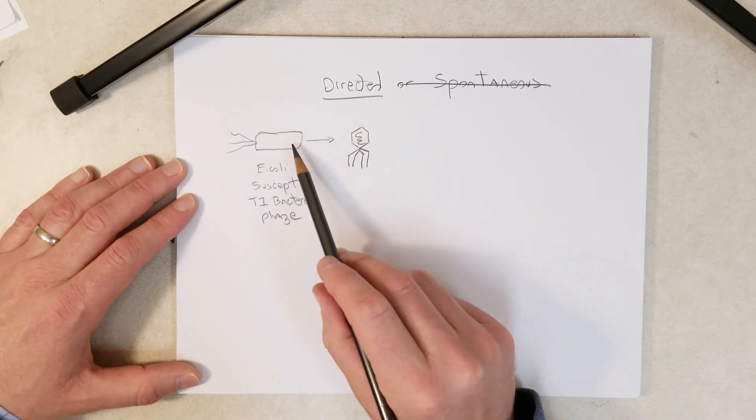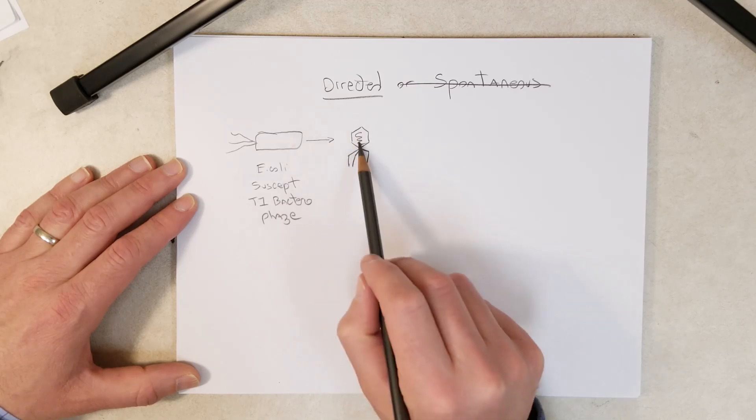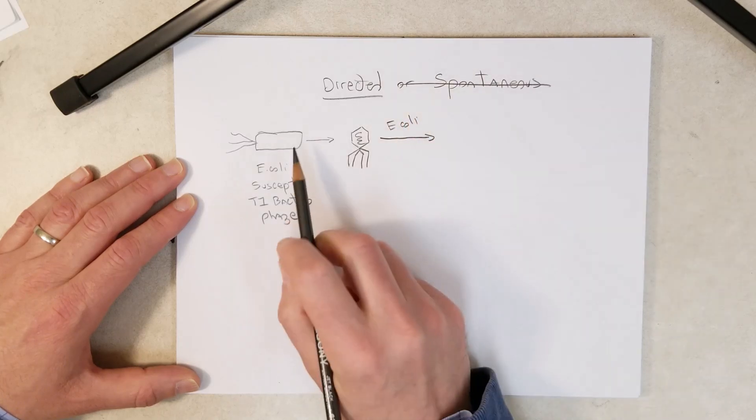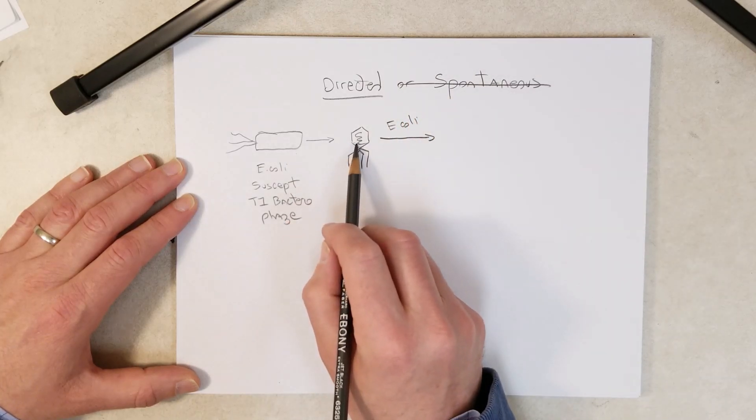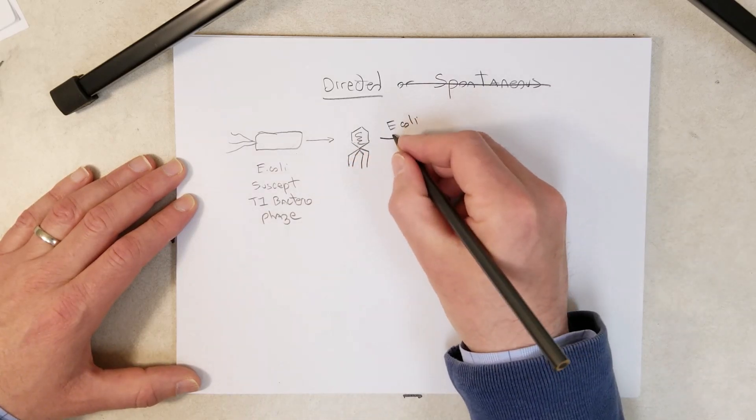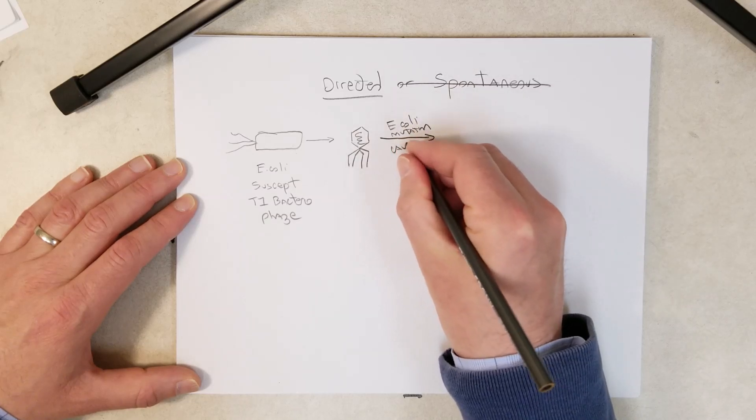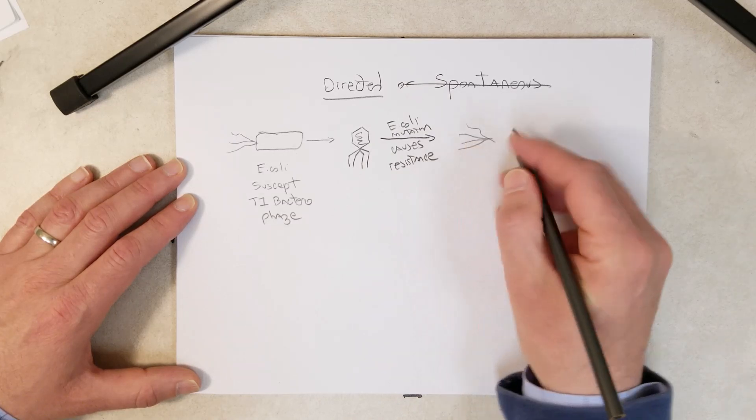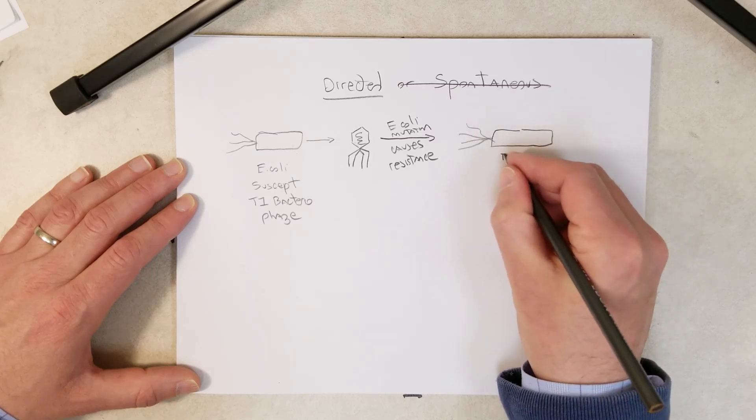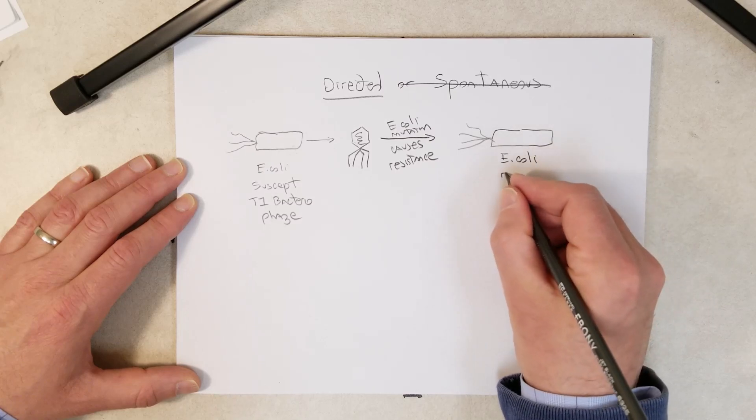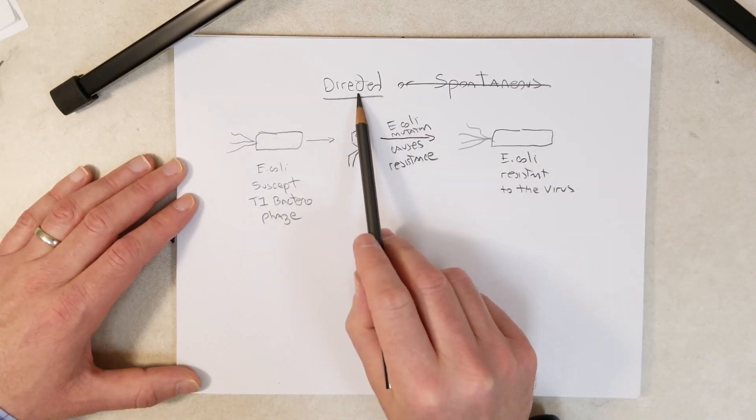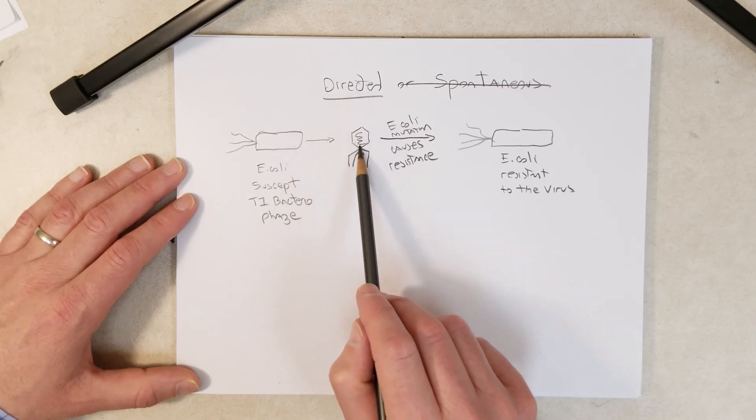Here's maybe what this bacteriophage looks like with its genome packed in there. If a mutation occurs somewhere in the E. coli genome in a gene that makes the cell resistant to the bacteriophage as a result of coming into contact with the bacteriophage, that would be a directed mutation. The bacteria senses the virus is present, the infection starts, and that triggers a mutation in a gene.